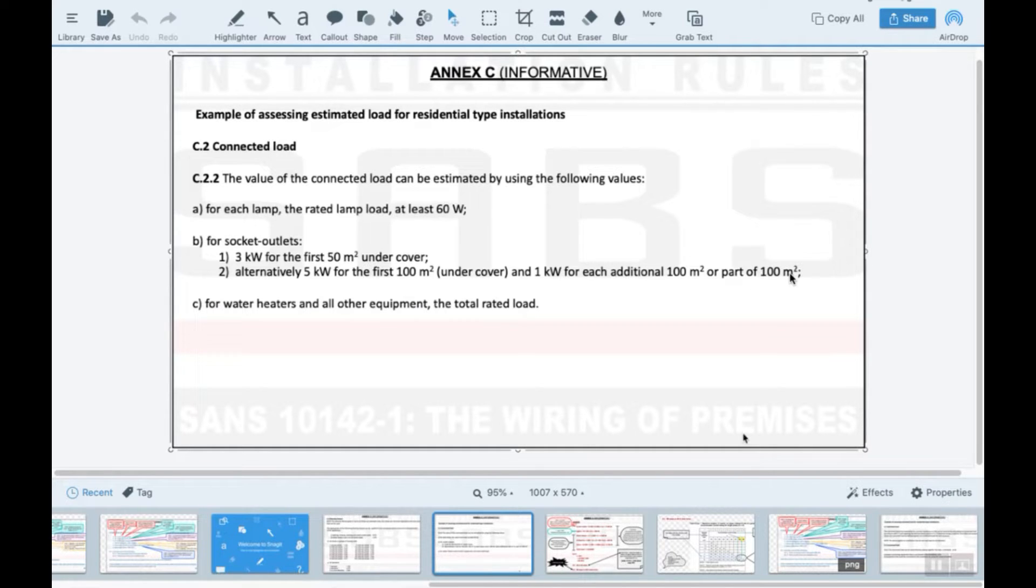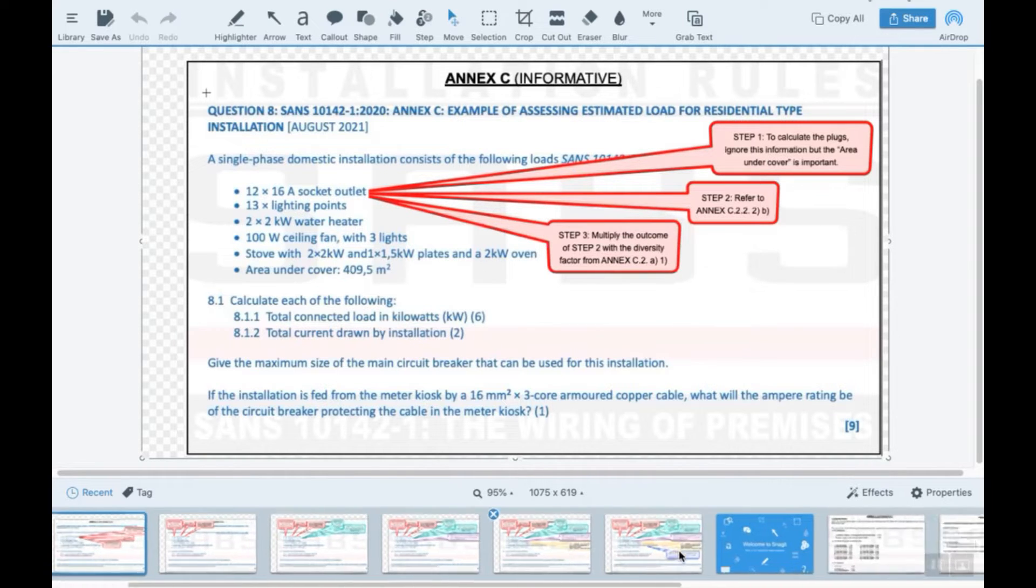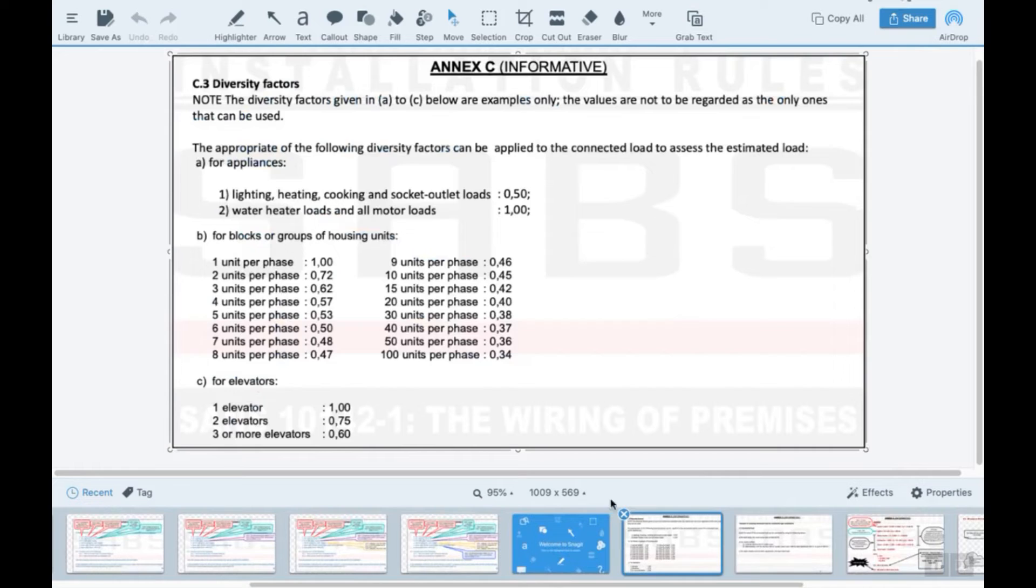Going back to that slide, step three: after you've applied this part to the floor area for plugs, then you must multiply that by the diversity factor. Diversity factor also found here, and it is clearly diversity factors. This is from the SANS book: lighting, heating, cooking, and socket outlets. So the diversity factor would be 0.5.